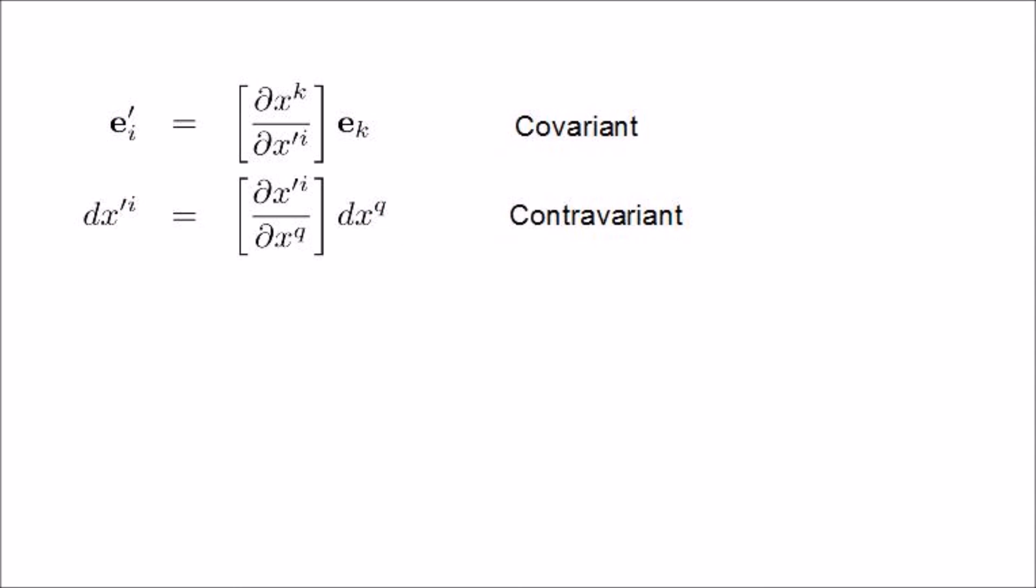Summing any covariant object together with any contravariant object produces an object that is invariant under coordinate transformation, whether they be a scalar, vector, or tensor. I will have more to say about tensors in a later video.